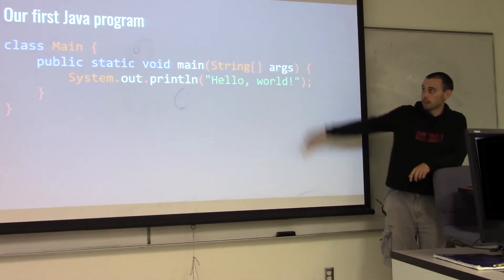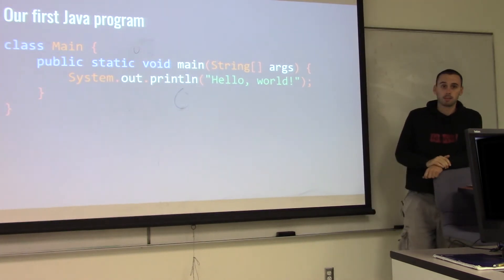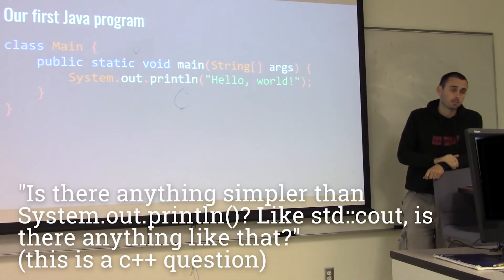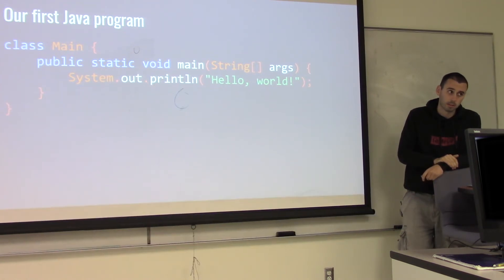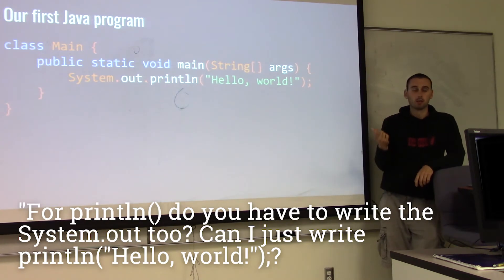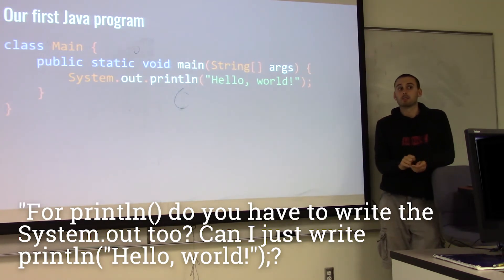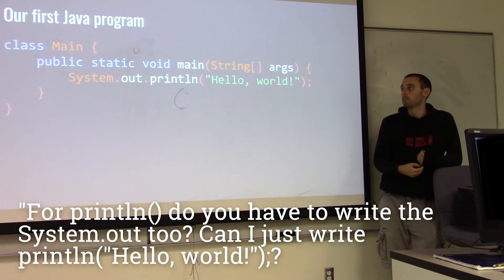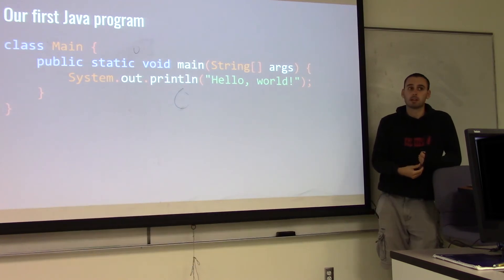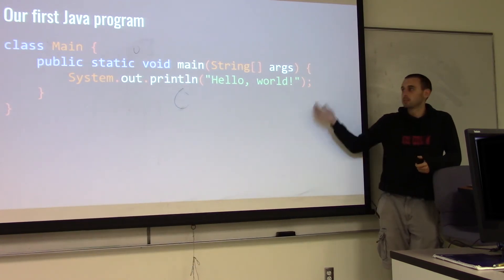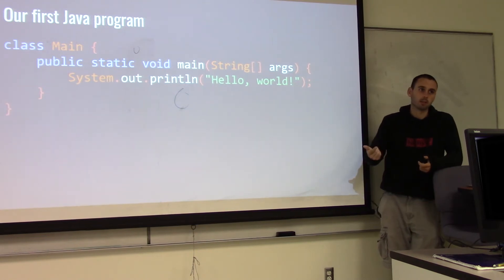A student asks about System.out versus just println. System.out.stream.println is another way to print — that's the interface the stream provides. If you just wrote println by itself it wouldn't know what you were talking about. In Python, the print function is a built-in in the global namespace. In Java, System.out is an object and you're calling println on that object — it's not a standalone function.